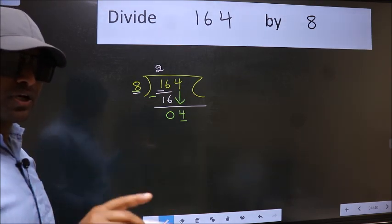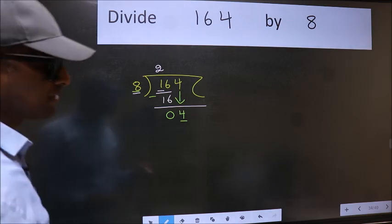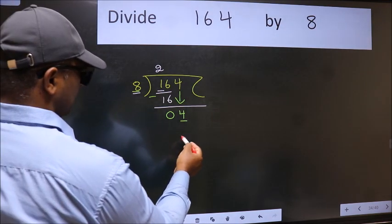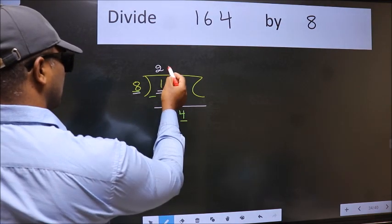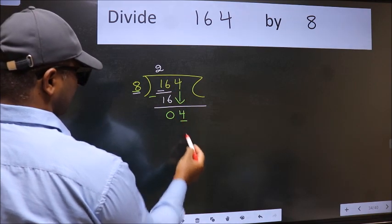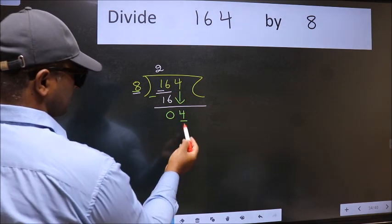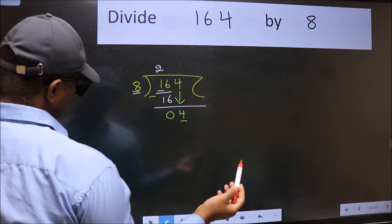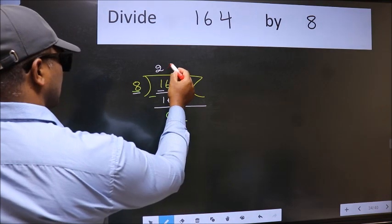Instead of that, what should we do? Which number should we take here? If I take 1, we will get 8, but 8 is larger than 4. So what we do is take 0.